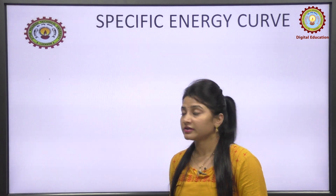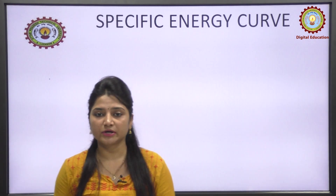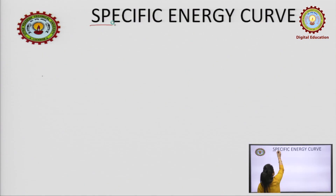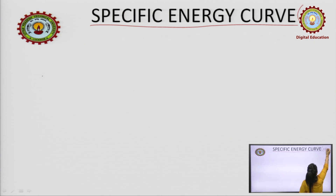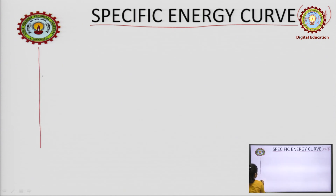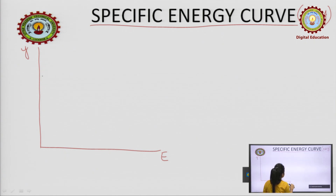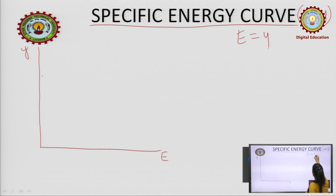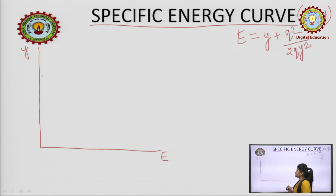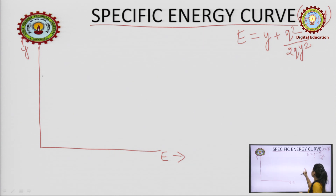Now we can study about the specific energy curve. To plot a curve, you need two parameters. For the specific energy curve, the two parameters are E (specific energy) and y (depth). So here we are going to plot a graph between E and y. The basic equation is E = y + q²/(2g·y²), with y along the y-axis and E along the x-axis.